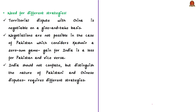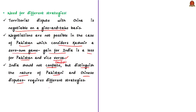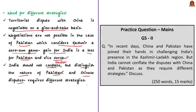The author believes the territorial dispute with China is negotiable on a give-and-take basis. But this is not possible with Pakistan, because Pakistan considers Kashmir a zero-sum game — a gain for India is a loss for Pakistan and vice versa. So India should not conflate both disputes; instead, it should distinguish the nature of Pakistani and Chinese disputes and apply different strategies. The editorial is titled 'Pincers Provocation' because it indicates an attack from two places at once — Pakistan and China — aimed at surrounding India.